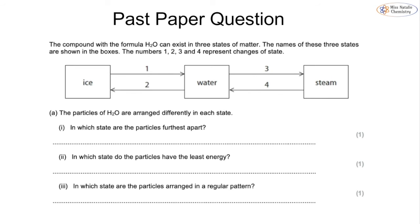Now we'll look at some past paper questions. The compound with the formula H2O can exist in three states of matter. First: in which state are the particles furthest apart? We know that's the gas — steam. Second: in which state do the particles have the least energy? That's the one where they move the least, only vibrating on the spot — ice. You can also say solid and still get the mark. Third: in which state are the particles arranged in a regular pattern? That is also ice.